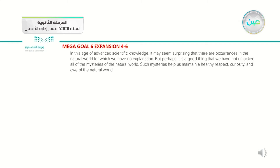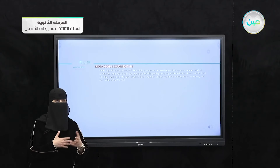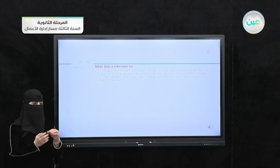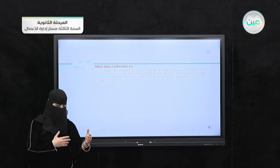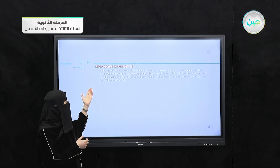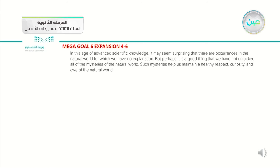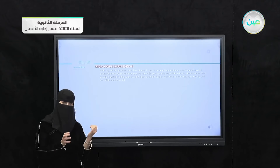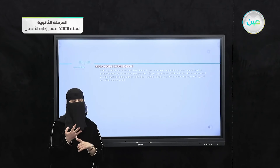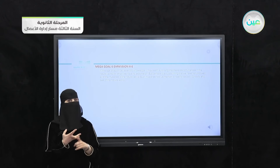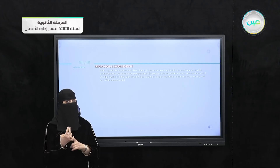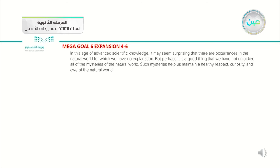This is the end of our reading passage. They talk about how until now, scientists through technology and science still have mystery things — some explained by science and technology, and others that are not. In this age of advanced scientific knowledge, it may seem surprising that there are occurrences for which we have no explanation. From this reading passage, we discussed the types and meanings of mystery and mentioned three kinds with real stories from different countries.